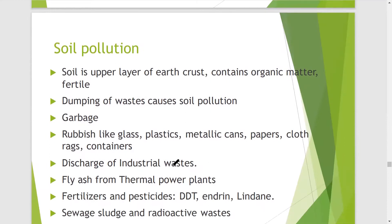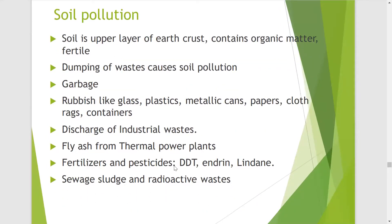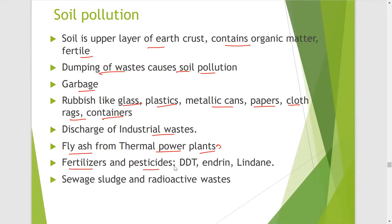Now coming to soil pollution. Soil is the upper layer of the earth's crust and contains organic matter which is fertile. Dumping of waste causes soil pollution — like garbage, rubbish such as glass, plastic, metallic cans, papers, cloth bags, and containers. Industrial waste discharge can also pollute soil. Fly ash from thermal power plants is also a soil pollutant. Similarly, fertilizers and pesticides used in soil, like DDT, BHC, and lindane, also cause soil pollution. Sewage sludge and radioactive waste are also responsible for soil pollution.